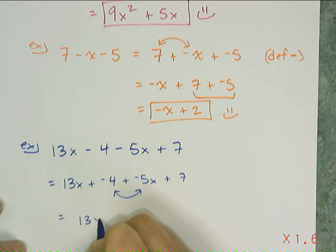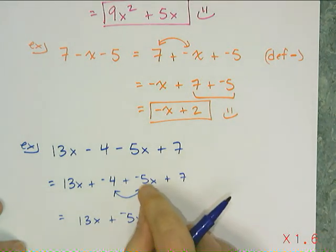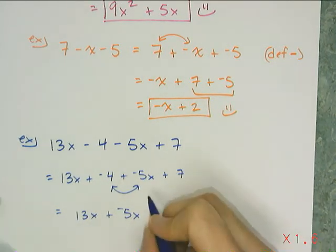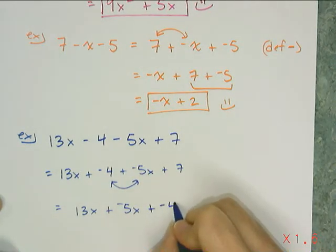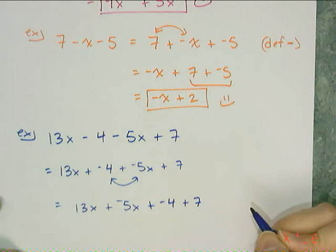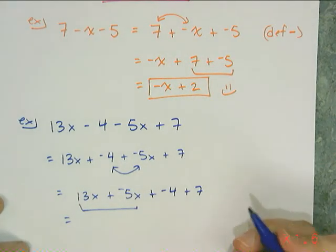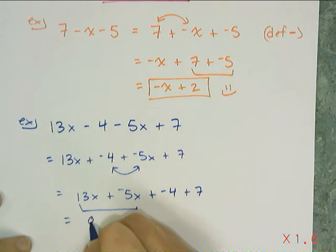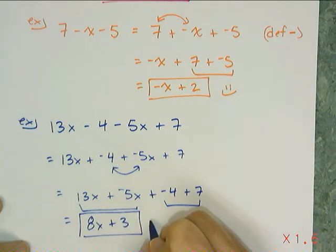And now I can swap those two terms. I can put the 13x along with that negative 5x, because remember the sign goes with it. That was the whole point of adding the negative. And then move the negative 4 over here and add a 7. And so then I can combine these guys. 13x plus negative 5x is 8x. And negative 4 plus 7 is 3. So this thing simplified is 8x plus 3.